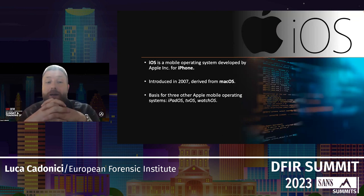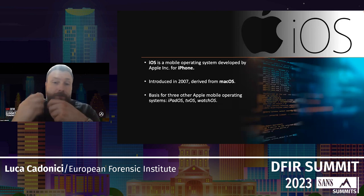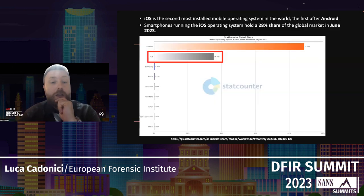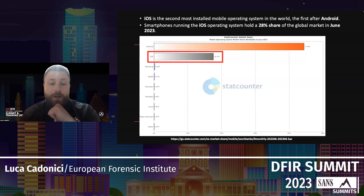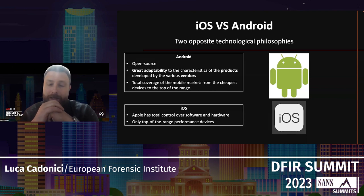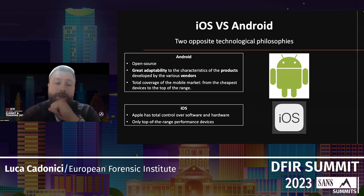iOS is the mobile operating system developed by Apple. It was introduced in 2007, derived for iDevices — iPhone, iPods — and now forms the basis for three other Apple mobile operating systems: iPadOS, TVOS, and WebOS. It's the second most installed mobile OS in the world after Android. Android is open source with great adaptability and total coverage of the mobile market, while iOS is built for top-of-the-range devices and maintains total control over software and hardware.